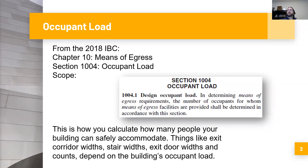Let's take a look at the 2018 International Building Code. First things first, Chapter 10 — Means of Egress — is how an occupant in a building is able to safely exit that building and make it to a public right of way. That is obviously a very important part of safe building design.